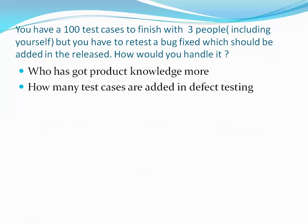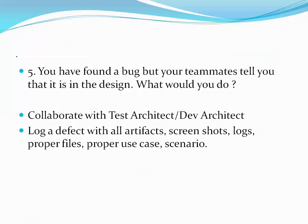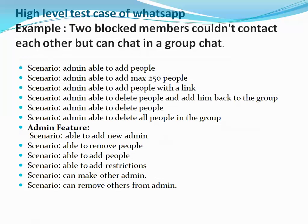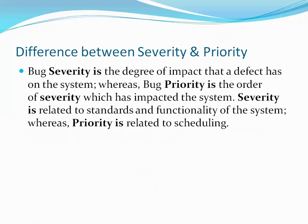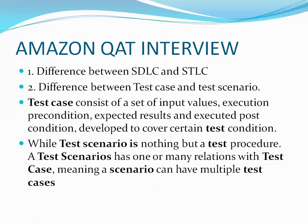Let me repeat the questions: you have 100 test cases to finish with three people including yourself, but you have to retest a bug fix to be added in the release — how would you handle it? You have found a bug but your teammates say it is in the design — what would you do? High-level test cases of WhatsApp where two blocked members cannot contact each other but can chat in a group. Difference between severity and priority, SDLC and STLC, and difference between test case and test scenario.